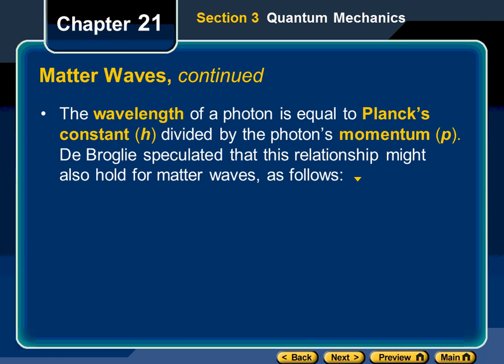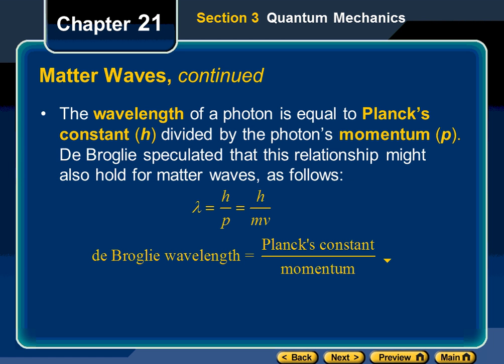The wavelength of a photon equals Planck's constant divided by the photon's momentum. De Broglie speculated this relationship also holds for matter waves. De Broglie's wavelength equation: λ = h / p, where p is momentum — mass times velocity. This equation equates wave characteristics (wavelength) and particle characteristics (mass, momentum).